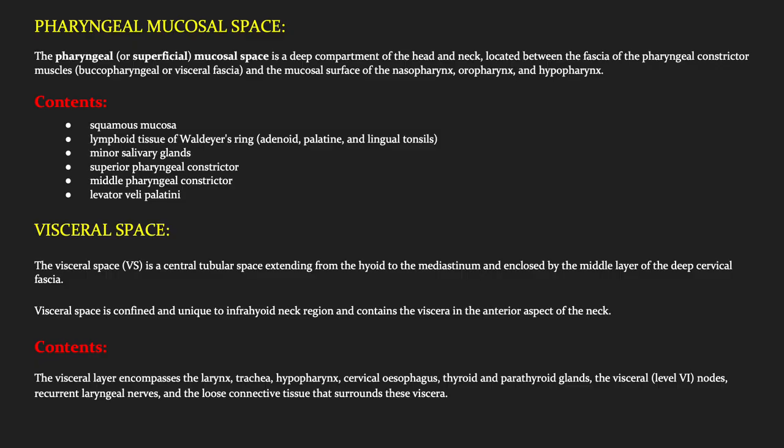The pharyngeal mucosal space is located between the fascia of pharyngeal constrictor muscles and the mucosal surface of nasopharynx, oropharynx and hypopharynx. It contains adenoids, palatine tonsils and lingual tonsils, minor salivary glands, superior and middle pharyngeal constrictor, and levator veli palatini. The visceral space is a continuation of the pharyngeal mucosal space and is a central fibromuscular space extending from the hyoid to the mediastinum, enclosed by the middle layer of deep cervical fascia. It is unique to the infrahyoid neck and encloses the larynx, trachea, hypopharynx, cervical esophagus, thyroid and parathyroid glands.